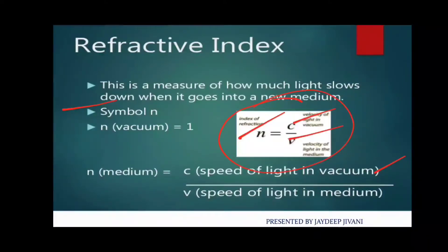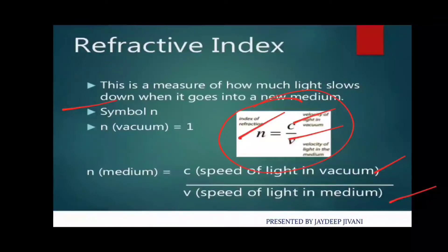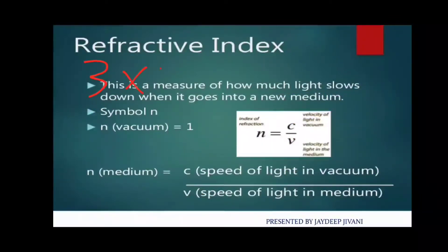And v is equal to the speed of light in the medium — whatever medium whose refractive index you want to find, you put the speed of light inside that medium as v. For example, for water's refractive index, v is the speed of light in water; for glass, v is the speed of light in glass. Vacuum is used as the reference.